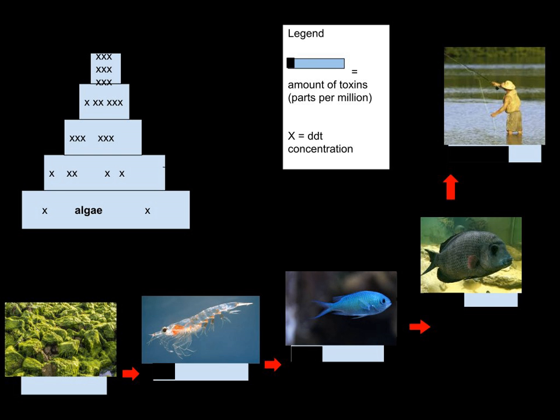This increase can occur as a result of persistence, where the substance cannot be broken down by environmental processes; food chain energetics, where the substance's concentration increases progressively as it moves up a food chain; and a low or nonexistent rate of internal degradation or excretion of the substance, often due to water insolubility.